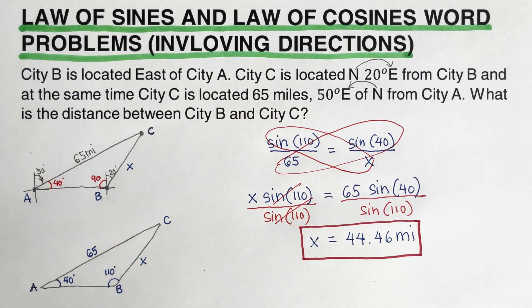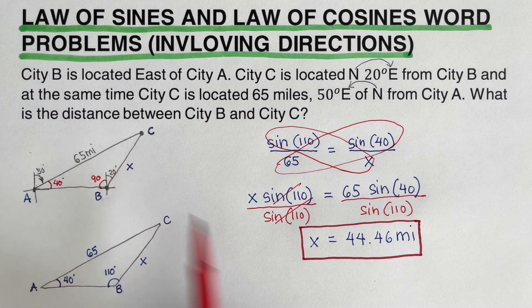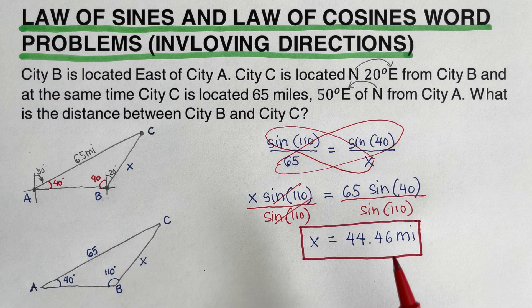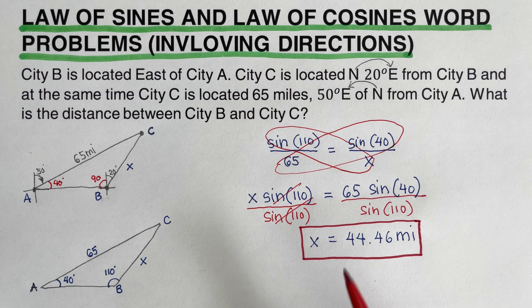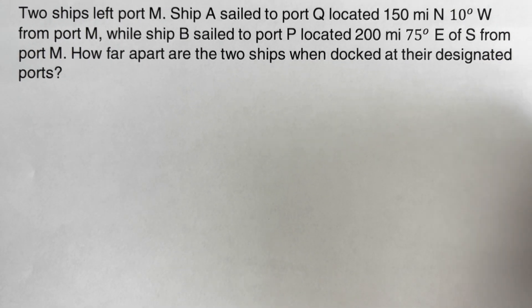The distance between city B and city C is 44.46 miles. Please remember that before solving problems involving law of sines and law of cosines, make sure your calculator is set to degrees. I encourage you to pause the video and try the next problem on your own.